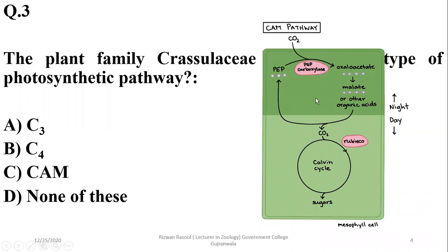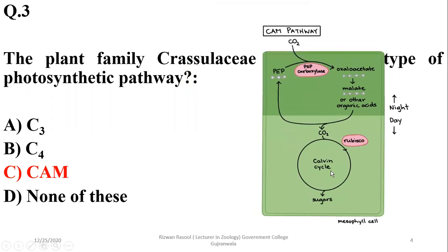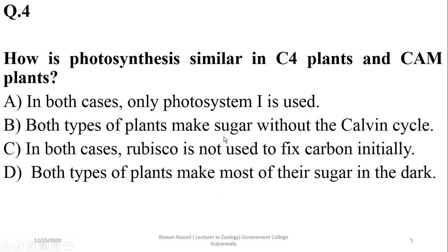The plant family Crassulaceae shows which type of photosynthetic pathway? Crassulaceae shows the CAM — Crassulacean Acid Metabolism — pathway. It was first discovered in this family of desert plants. How is photosynthesis similar in C4 plants and Crassulaceae CAM plants?